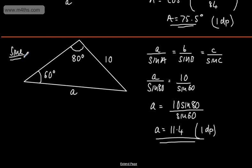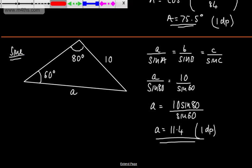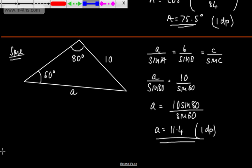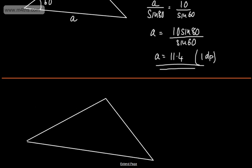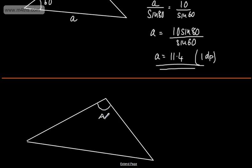So we used the cosine rule when we had an enclosed angle and two known sides, and the sine rule where we have one known side and two non-enclosed angles. Now let's look at finding a missing angle using the sine rule. We have a non-right-angle triangle where we want to find angle A. We're given side length 9 opposite angle A, a known angle of 50 degrees, and the side length opposite that is 7.